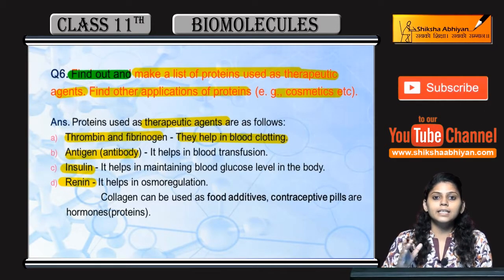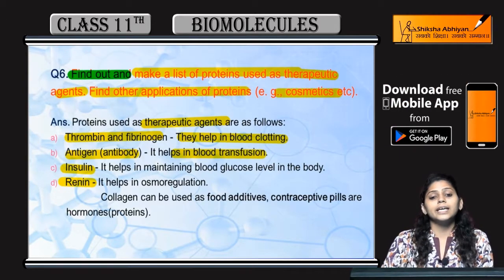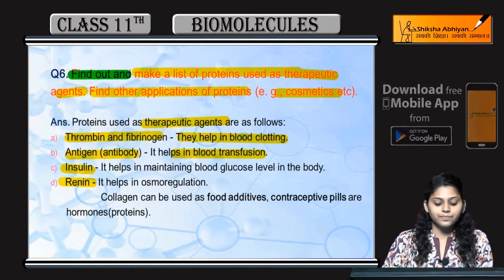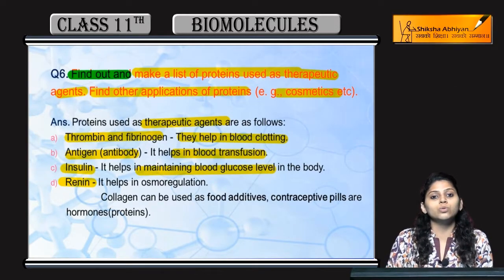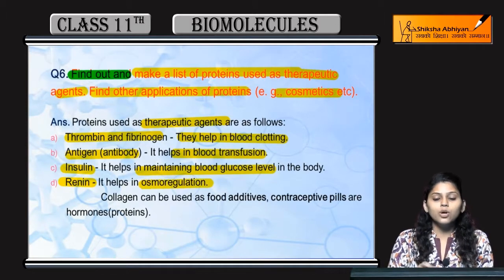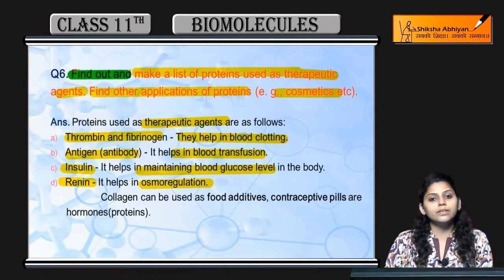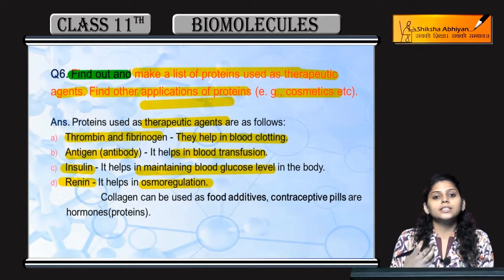Antigens and antibodies help in blood transfusion. Insulin maintains the body's blood glucose level. Renin helps in osmoregulation. These are the main therapeutic proteins and their functions.